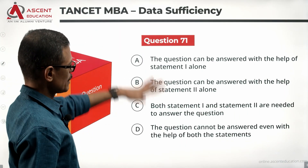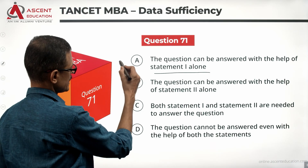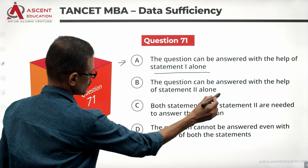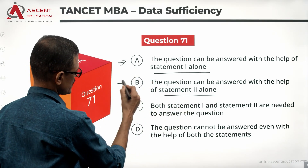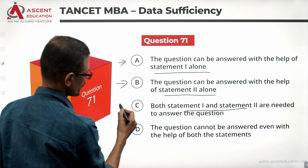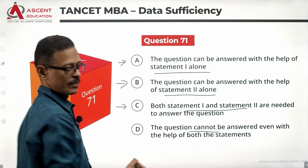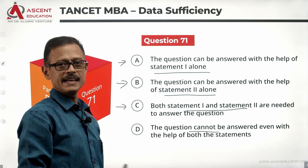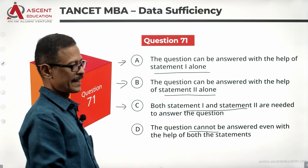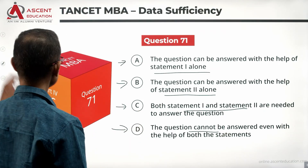We know the answer options. Statement 1 alone is sufficient — that is answer A. Statement 2 alone is sufficient — that is answer B. Both statements together are sufficient — that is answer C. If the given data is not sufficient and the question cannot be answered even with additional data, the answer option is D.